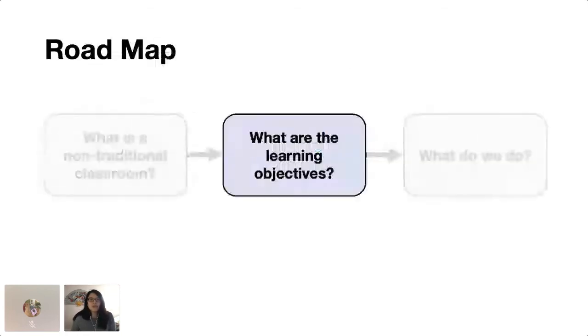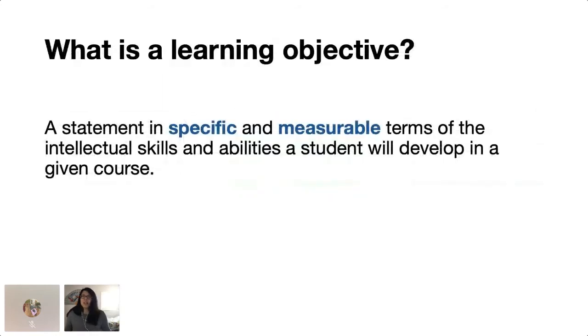So on that note, what are our learning objectives? First, let's have an operational definition of what learning objectives are. Learning objectives are a statement in specific and measurable terms of the intellectual skills and abilities a student will develop in a given course. This is a very formal definition, very textbook like, but it's very applicable to a non-traditional learning context. Through learning objectives, we get to communicate to both anyone who's in an instructional role as well as a learning role in our context. And that's really, really important.